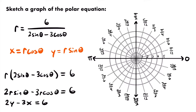Both equations will have the same graph. Since we are more familiar with the rectangular coordinate system, working with this rectangular equation is very helpful. Right away we can see this is a linear function — both x and y are raised to the first power, so the graph is going to be a line.